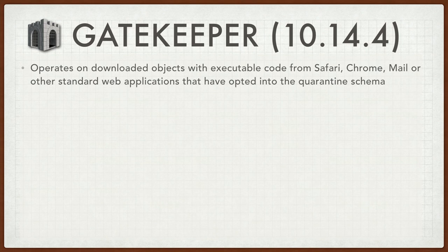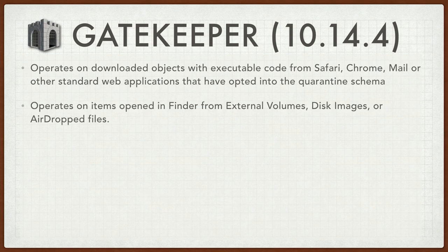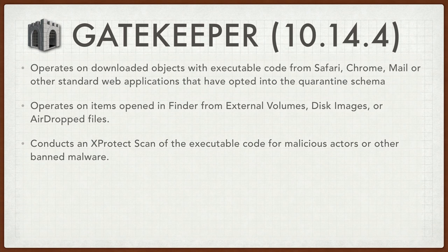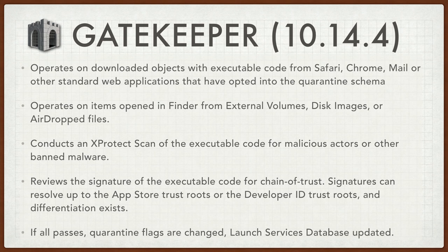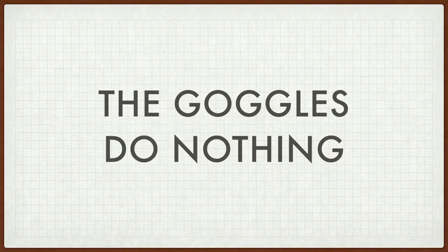We have Gatekeeper as of 10.14.4. It operates on downloaded objects with executable code from Safari, Chrome, Mail, or other standard web applications that have opted into the quarantine schema. It operates on items opened in the Finder from external volumes, disk images, or AirDropped files. It conducts an XProtect scan of executable code for malicious actors or other banned malware. And then it reviews the signatures of the executable code for chain of trust. Signatures can resolve up to the App Store trust routes or the Developer ID trust routes, and differentiation in the process exists. Lastly, if all passes, quarantine flags are changed, launch services databases are updated, and we're done.